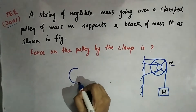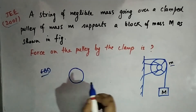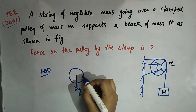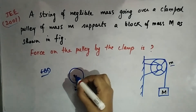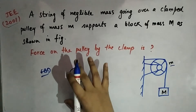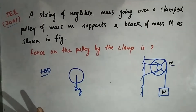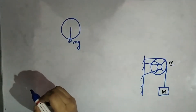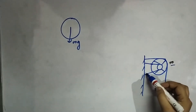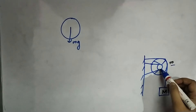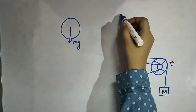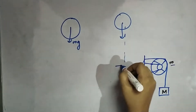If we try to make the FBD of the pulley, we have mass mg and a clamp — let's try to understand the physics with the help of FBD. The FBD for the pulley will have mg. Now let's suppose there is no clamp, no block mass M, nothing at all — the pulley will simply fall straight down to the ground.